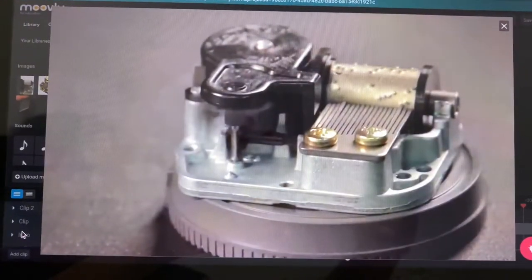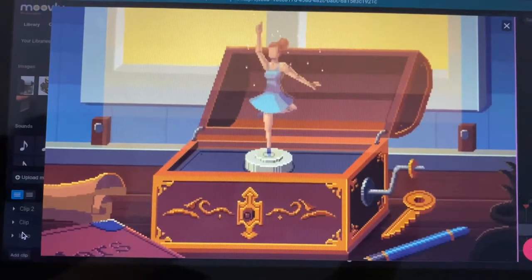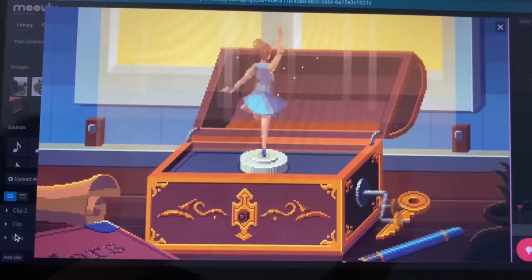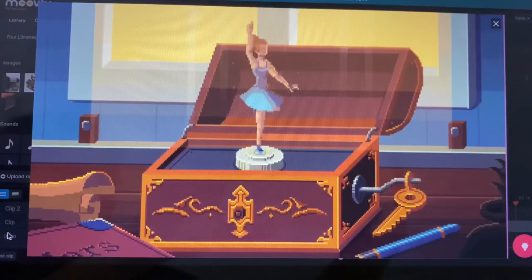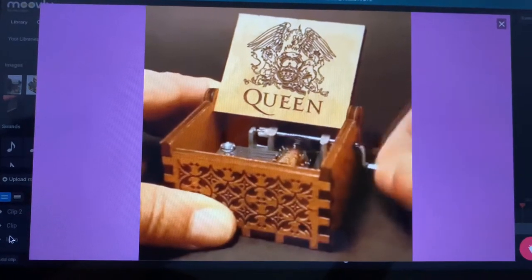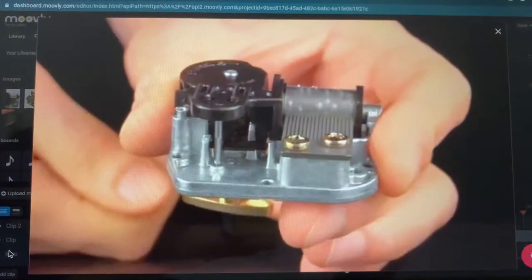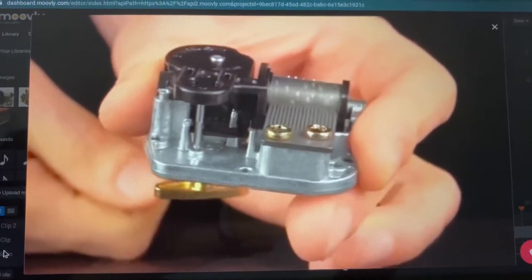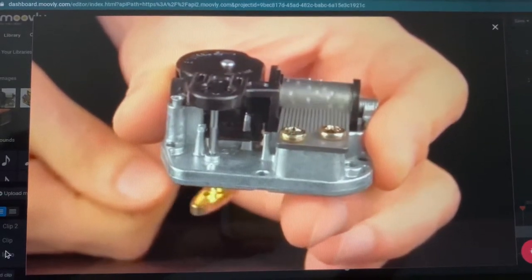Now that we know most of the components, here's how kinetic energy turns into sound energy through the music box. When winding up the music box, the clock spring inside starts to build up kinetic energy. Once released, the gears start to shift, causing the drum to start turning. Then the comb would start hitting the pins to create the melody of whatever song is playing.